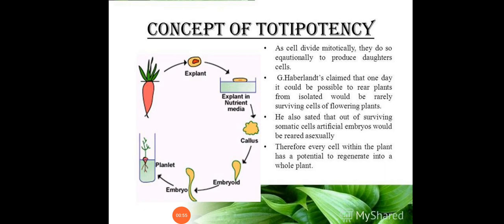The cell is basically divided in two manners: vegetative cells are divided by mitotic division, and reproductive cells are divided by meiotic division. In mitotic division, the cell divides equationally to produce daughter cells — that means one cell divides into two cells, and one chromosome divides into daughter chromosomes. This process can produce a whole plant.